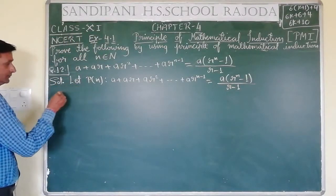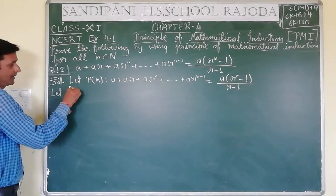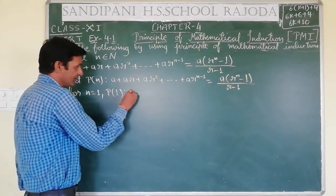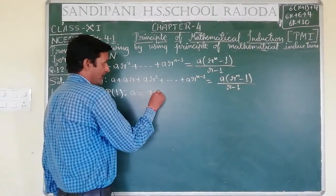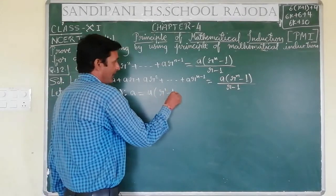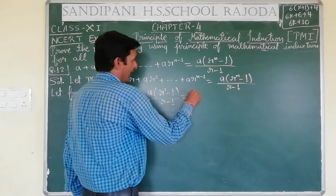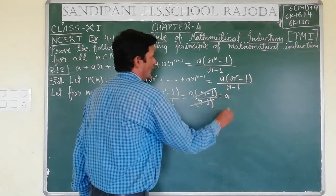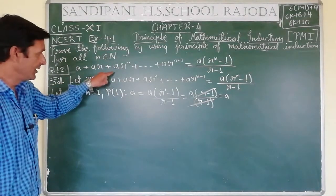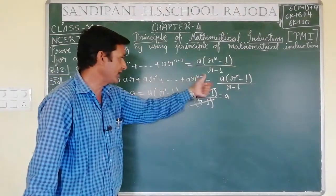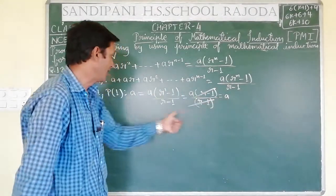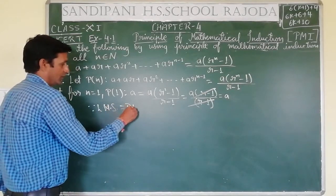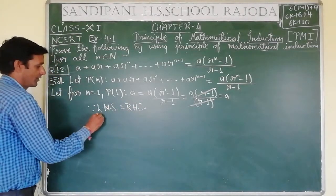In solution, let P(n) be: a + ar + ar² + ... + ar^(n-1) = a(r^n - 1)/(r - 1). For n = 1, P(1) is such that the first term is A, and RHS becomes A(r^1 - 1)/(r - 1) = A(r-1)/(r-1) = A. So LHS = A and RHS = A, therefore P(1) is true.